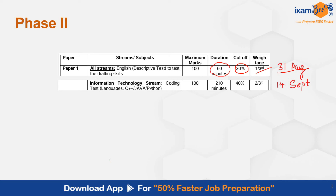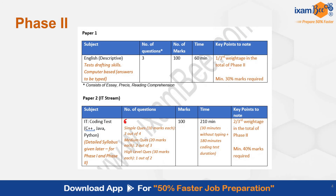Then you have the Information Technology stream paper, which is the coding test, of 3 and a half hours. 40% is the minimum cutoff, but you should target 95 to 100 in coding — aim for 100 out of 100. The weightage of this paper is 2/3rds, and this exam is on 14th September.